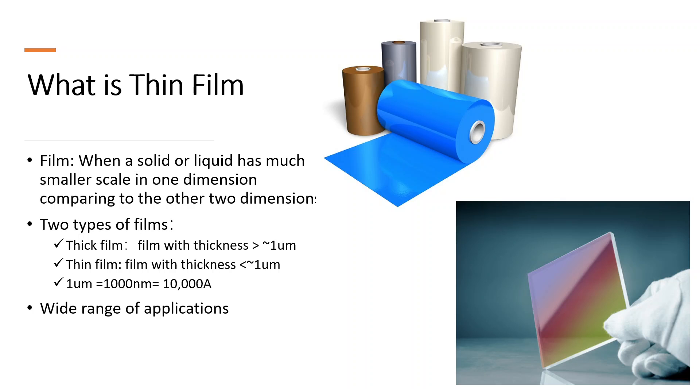So basically when we see the film in the material world, we say material science world, we talk, that's basically we see two types of films, one is the thick films, and another one is the thin films.